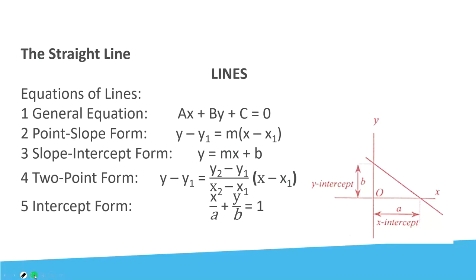Fifth, intercept form: x/a + y/b = 1, where a and b are the x-intercept and y-intercept of the line. The x-intercept is the horizontal distance from the origin where the line crosses the x-axis, and the y-intercept is the vertical distance where the line crosses the y-axis.